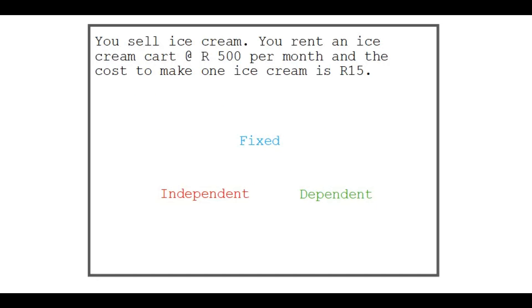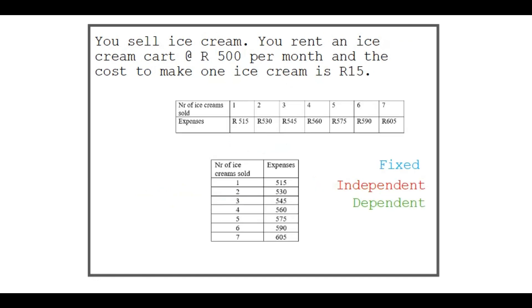Now let's say you sell ice cream. You rent an ice cream cart at 500 Rand per month, and the cost to make one ice cream is 15 Rand, so that's your expense. You need to decide whether these are fixed, independent, or dependent variables.